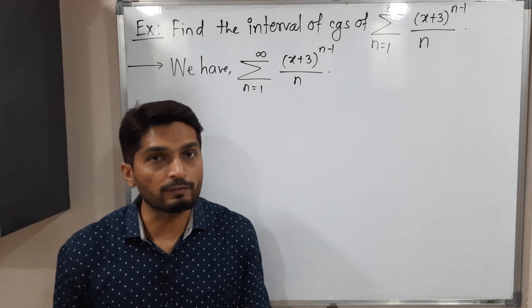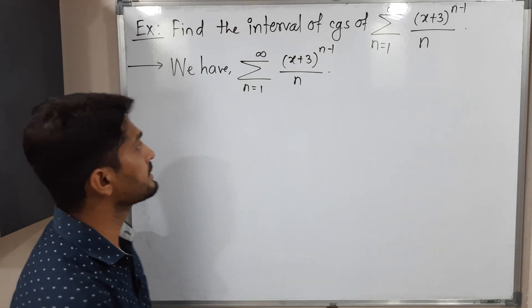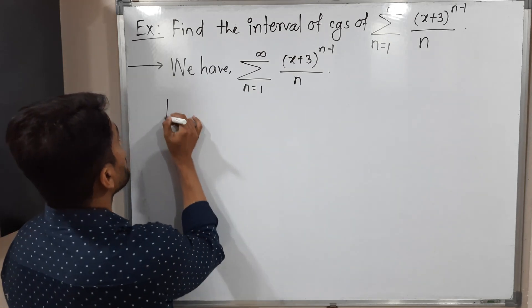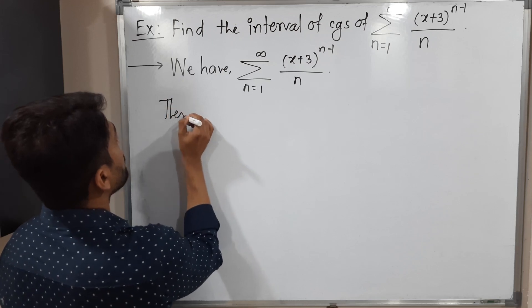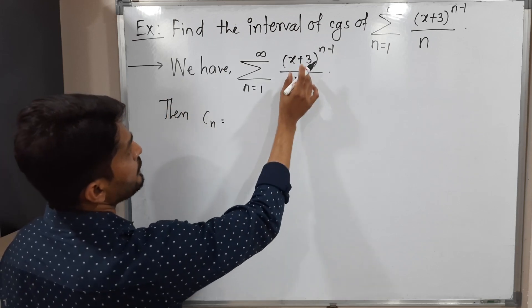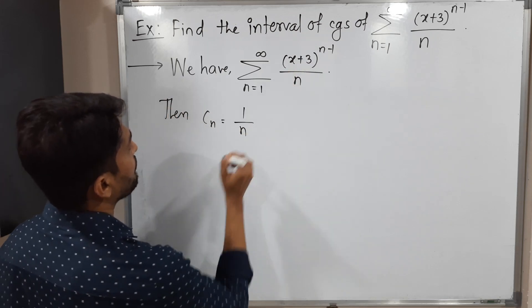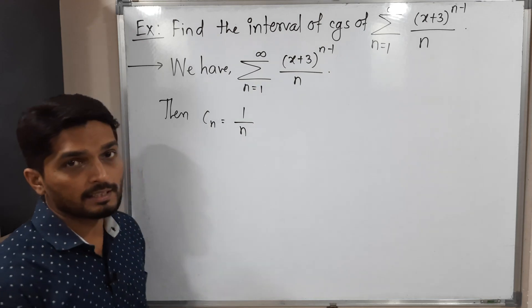So let us write its coefficient c_n. So c_n means the coefficient multiplied by this bracket, which is 1/n. So this is our c_n.